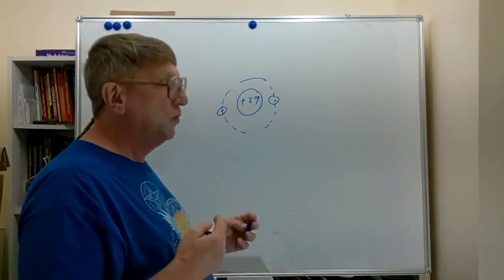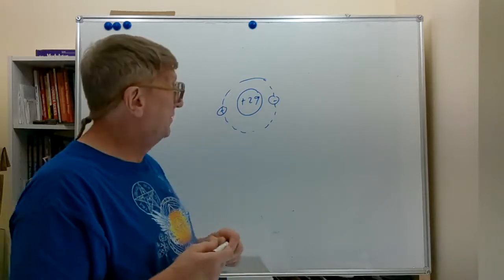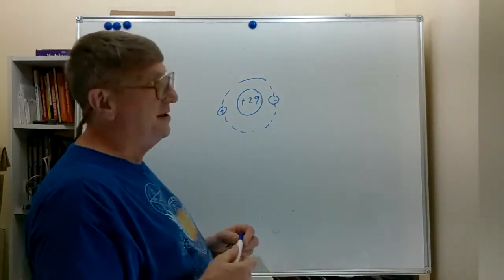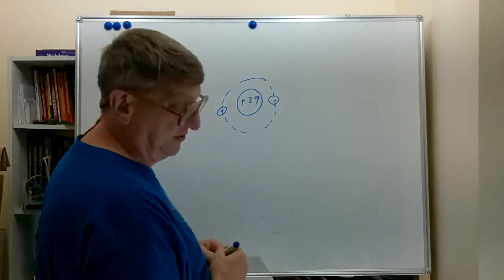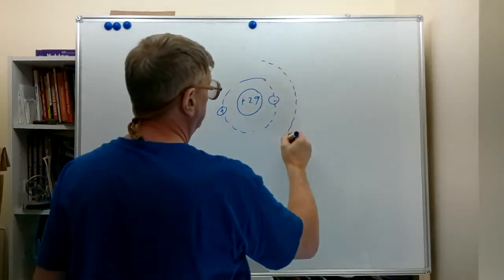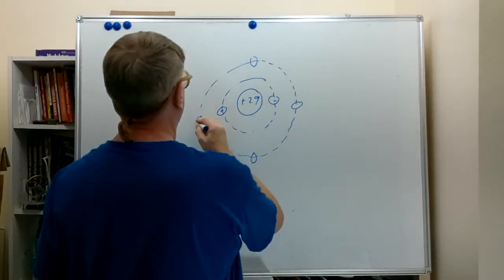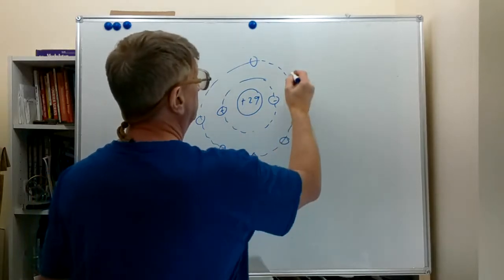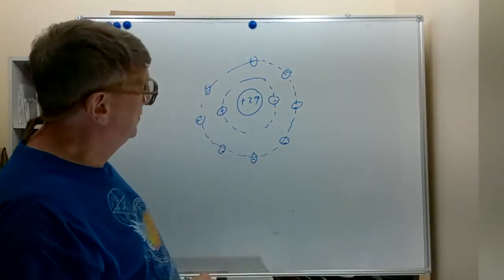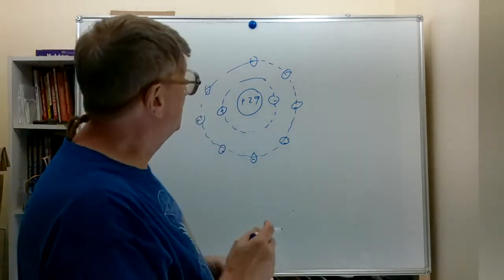The first shell has 1 or 2 electrons if it's a neutrally charged atom. If it were a hydrogen atom and we kicked out 1 electron, we'd basically be left with a proton — sometimes called a hydrogen nucleus. The second shell of the copper atom can have 8 electrons. So now we've put 10 of the electrons in.